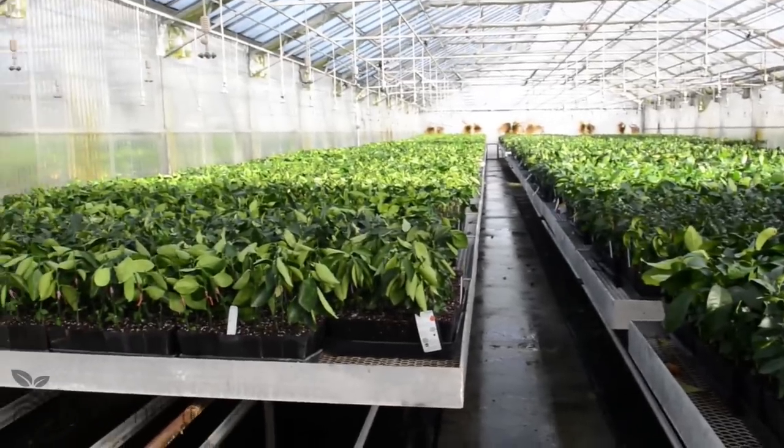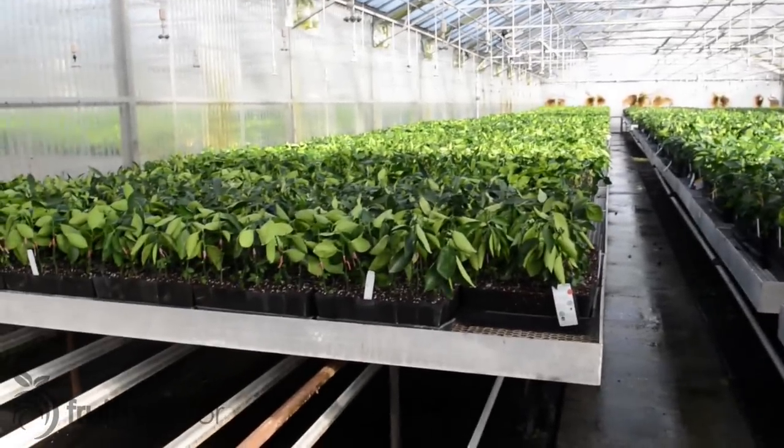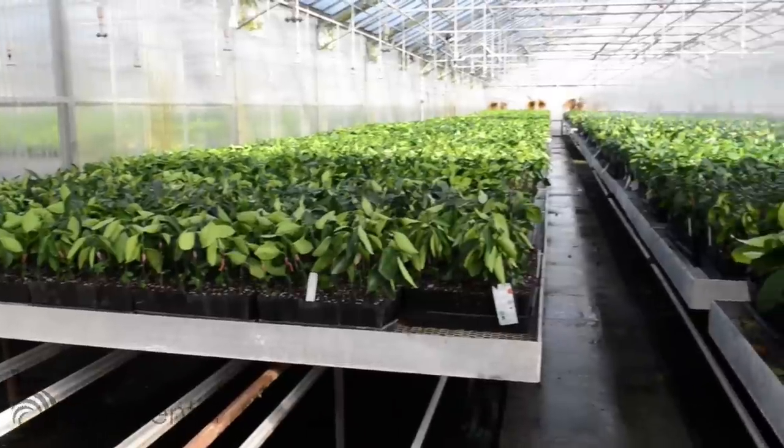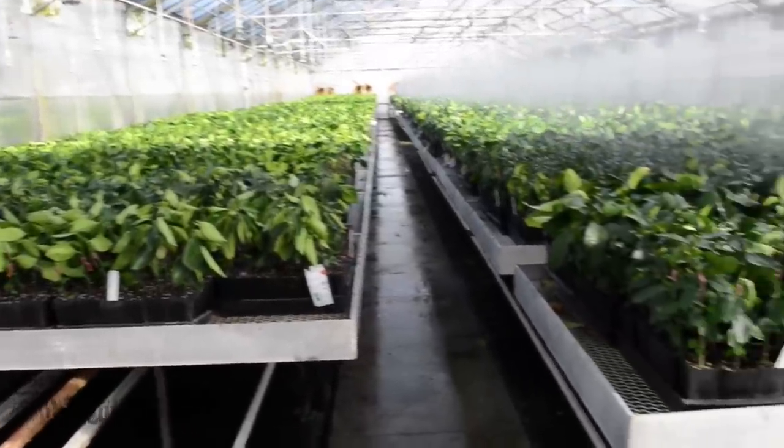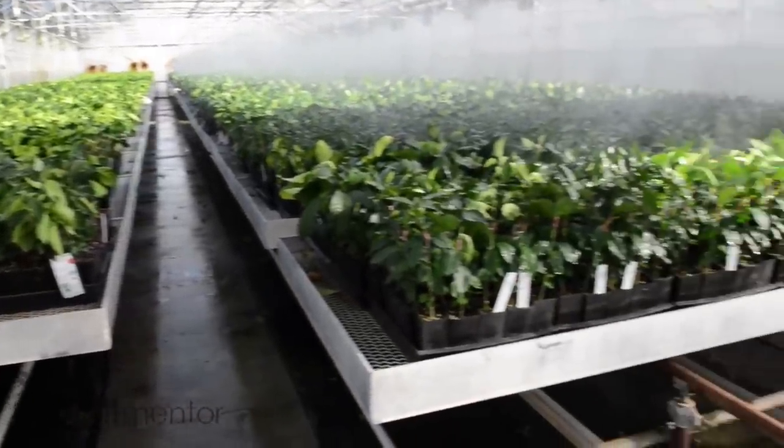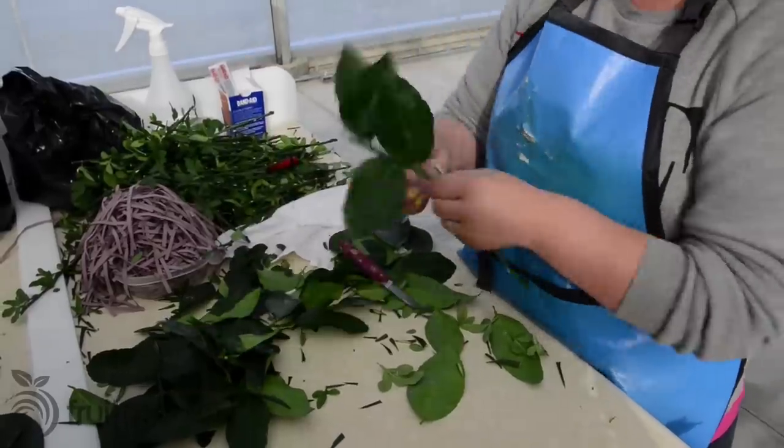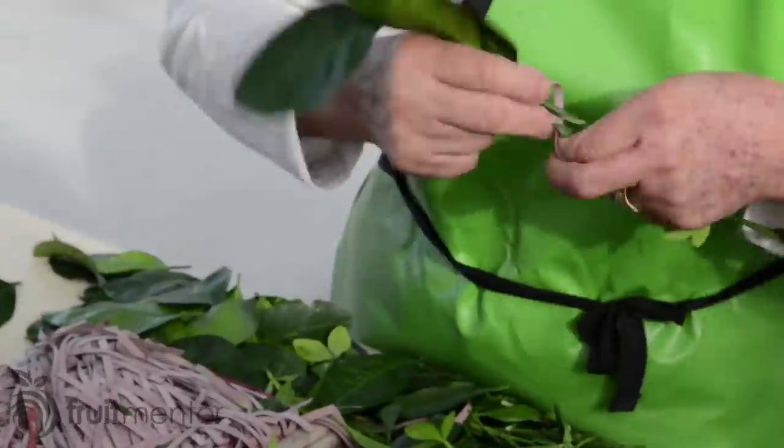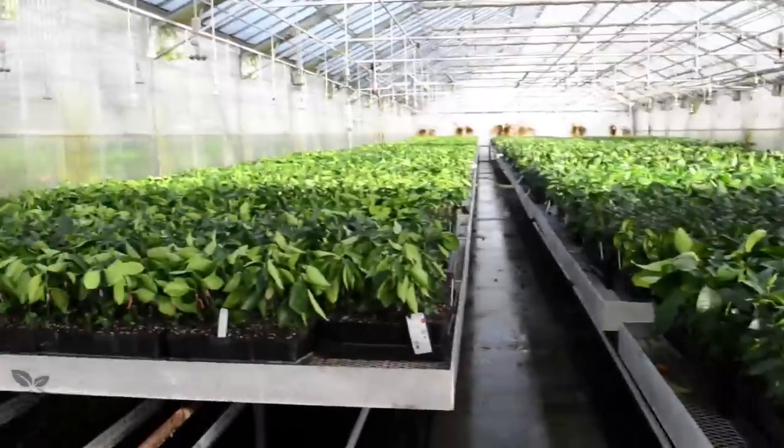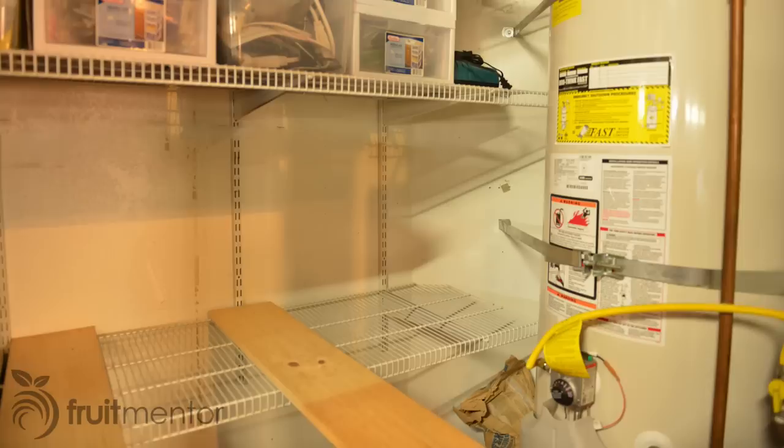To get roots to grow, the cuttings require the correct temperature, humidity, and amount of light. In the citrus production nursery, this is achieved by bottom heat and mist every 15 minutes. After seeing this in a nursery, I wanted to see if I could make my own grafted citrus trees from cuttings at home in my garage.